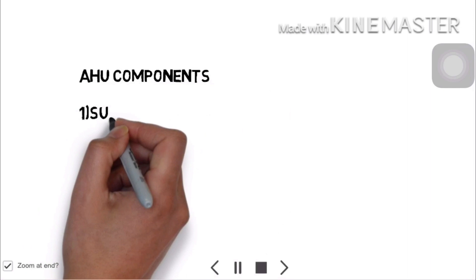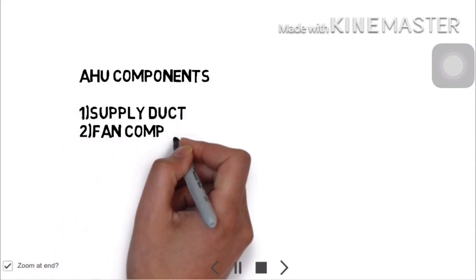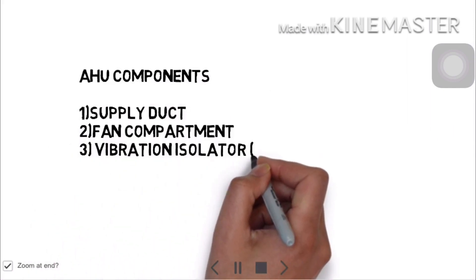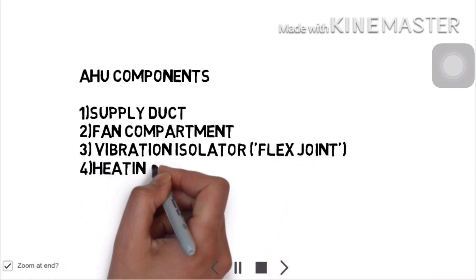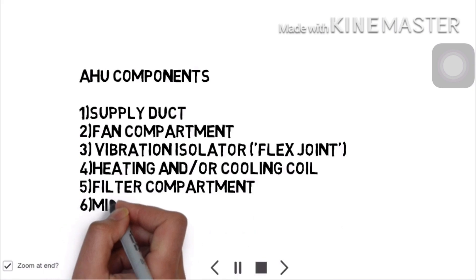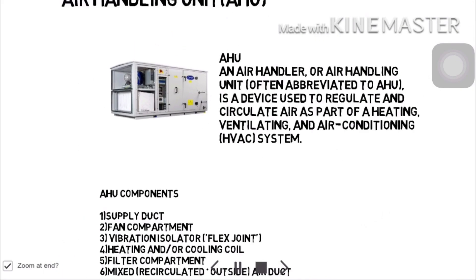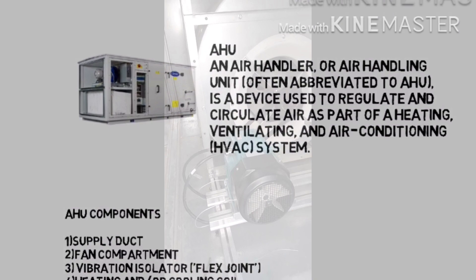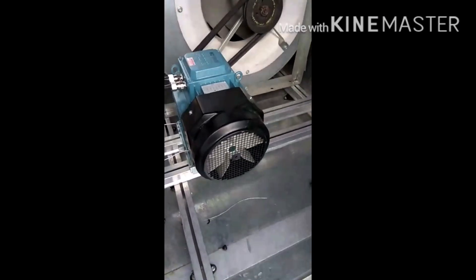AHU components: first, supply duct, fan compartment, vibration isolator, flex joint, heating and or cooling coil, filter compartment, mixed or recirculated outside air duct. Hello friends, welcome back. Today's topic is AHU and this is the AHU room.